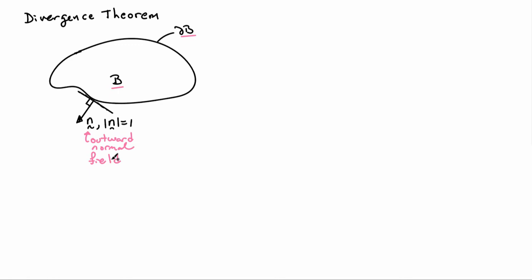So n is outward normal field and the divergence theorem is a theorem that allows you to transfer integrals over the surface to integrals over the volume and this is also important in a lot of derivational steps. So there are a number of forms of this so let me just go ahead and write these out.